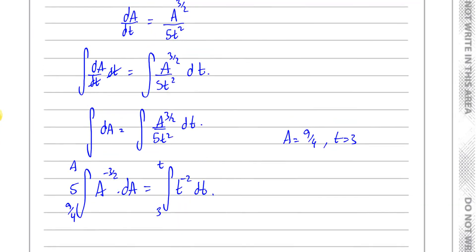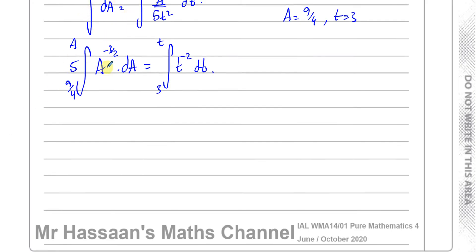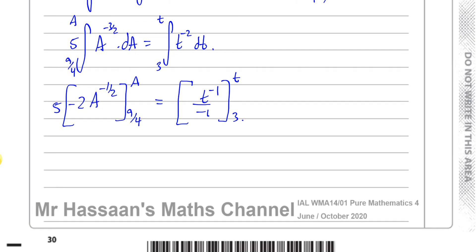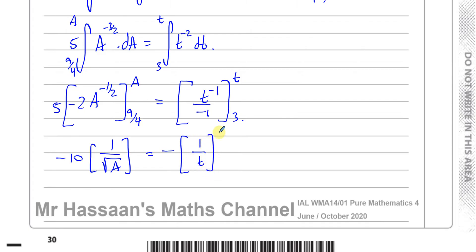Now I need to integrate. On the left, I have 5 times A^(−3/2). Adding 1 to the power gives A^(−1/2), divided by −1/2, which is multiplied by −2. So this becomes −10 times 1/√A, with limits A and 9/4. On the right, integrating t^(−2) gives t^(−1) divided by −1, so −1/t, with limits t and 3.